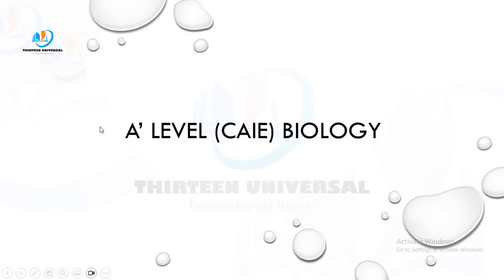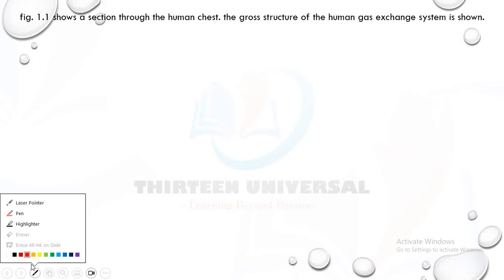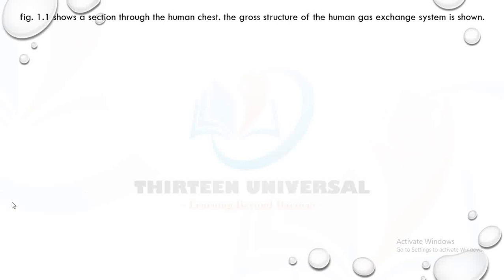This is A-Level Biology with schedule. We're going to be looking at gas exchange P2 Series One. Figure 1.1 shows a section through the human chest — the gross structure of the human gas exchange system.